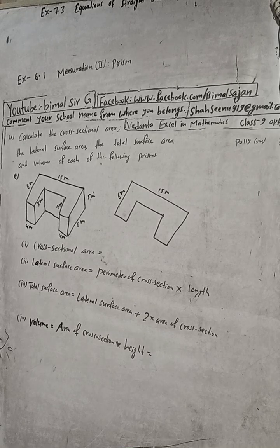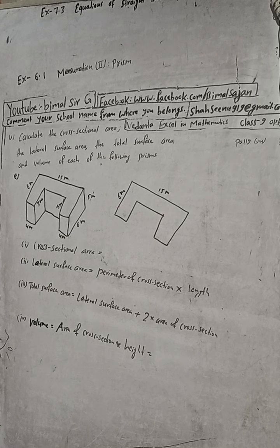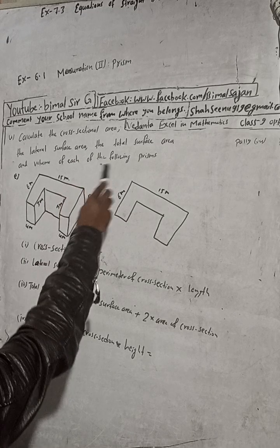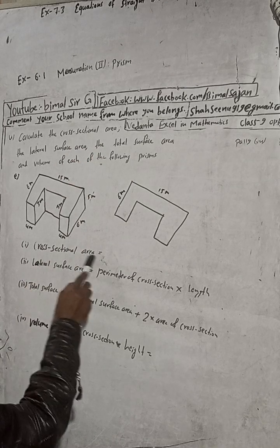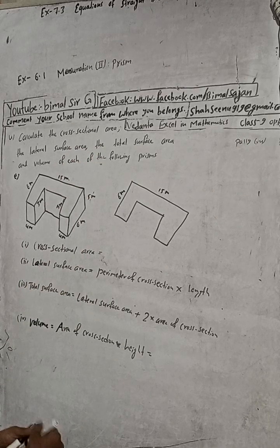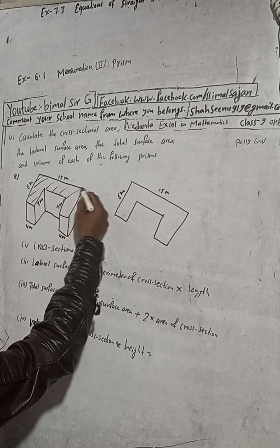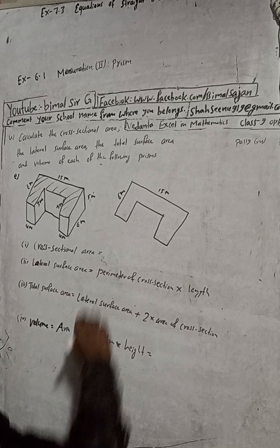This is question number 4a. You can see the figure, and to the right side you can see another figure that I have drawn showing the cross-sectional part. Here we need to calculate the cross-sectional area and the lateral surface area. The cross-sectional area refers to this part of the shape — this part is called the cross-sectional area.